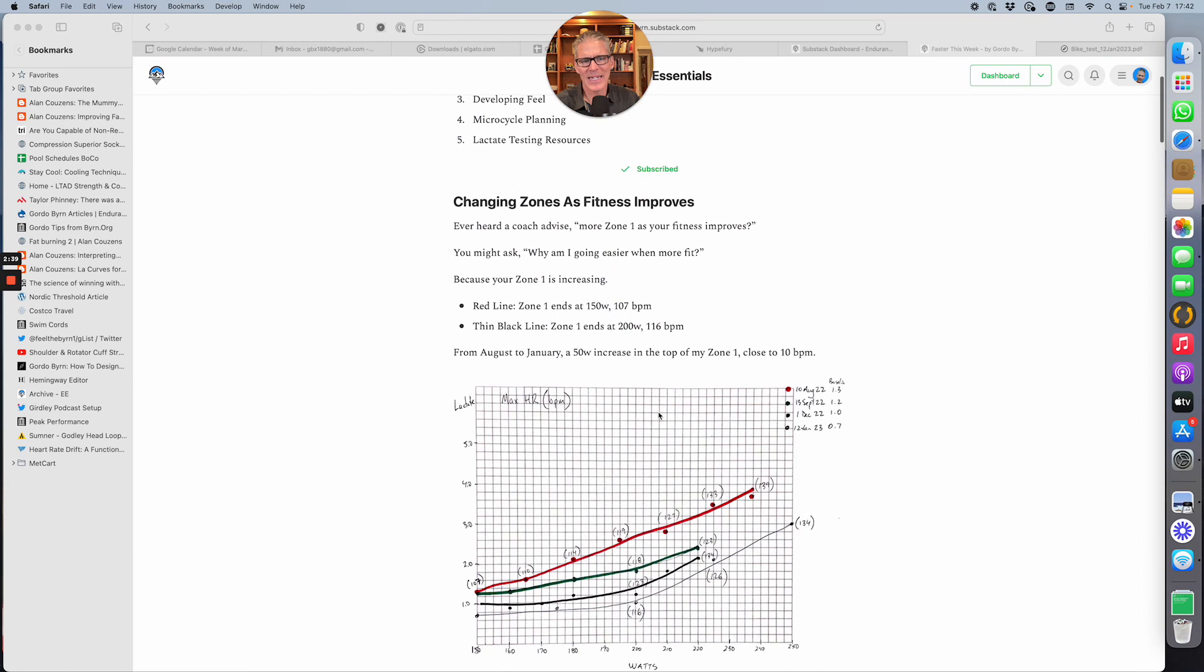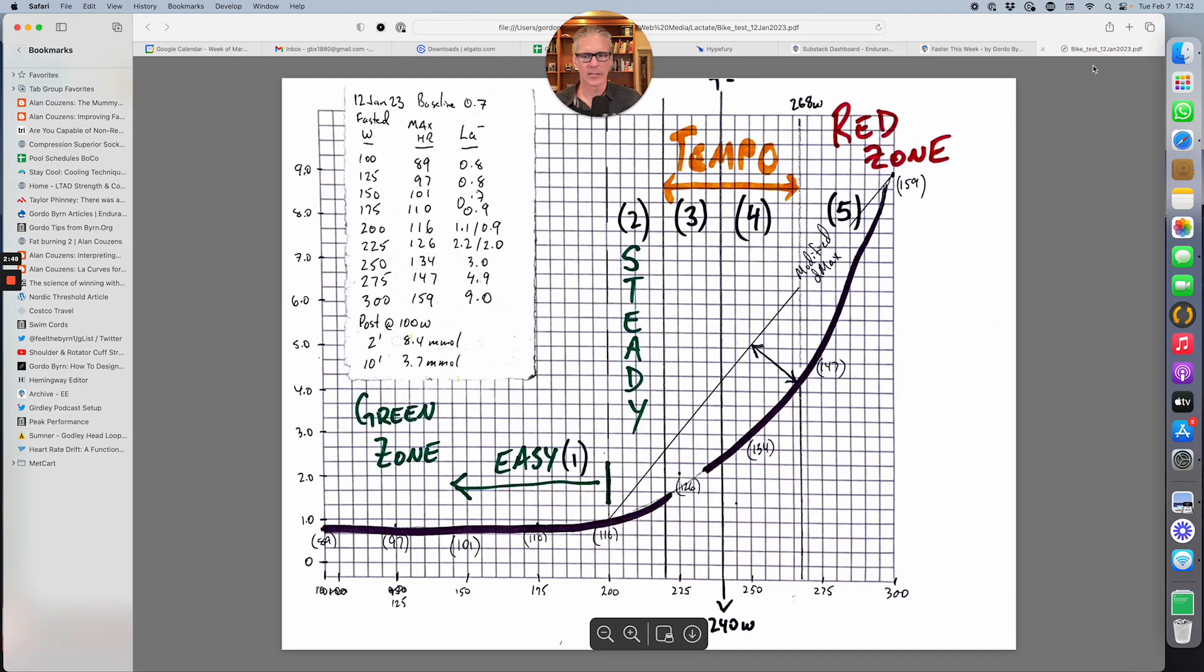And what that means is my zone one is moving to the right. So let me just show you here. So this is my current curve, the full curve. That was a segment of the curve. And so my easy zone right now is from 200 watts down. Whereas back in August, my easy zone was ending at about 150 watts.